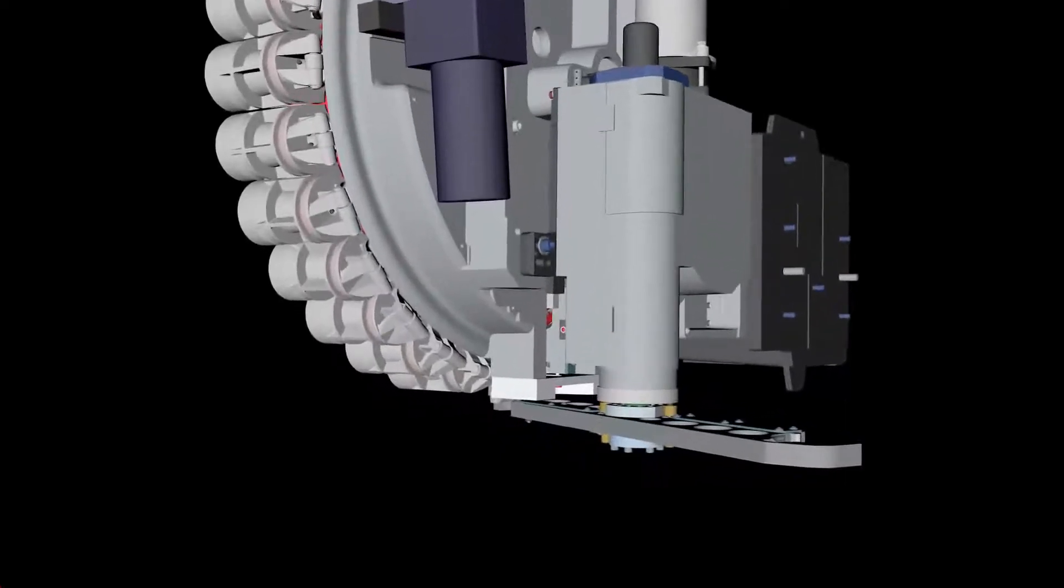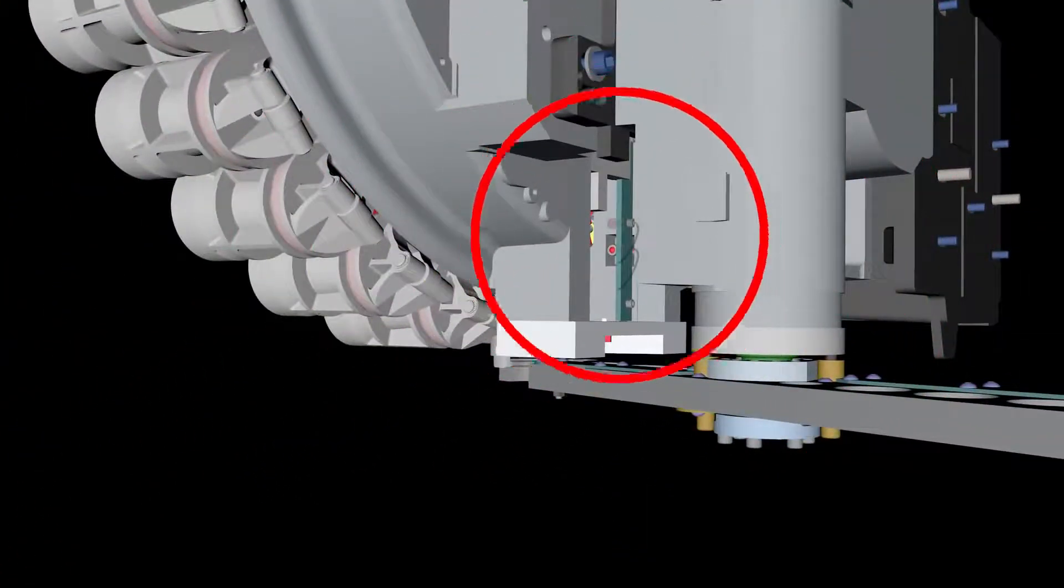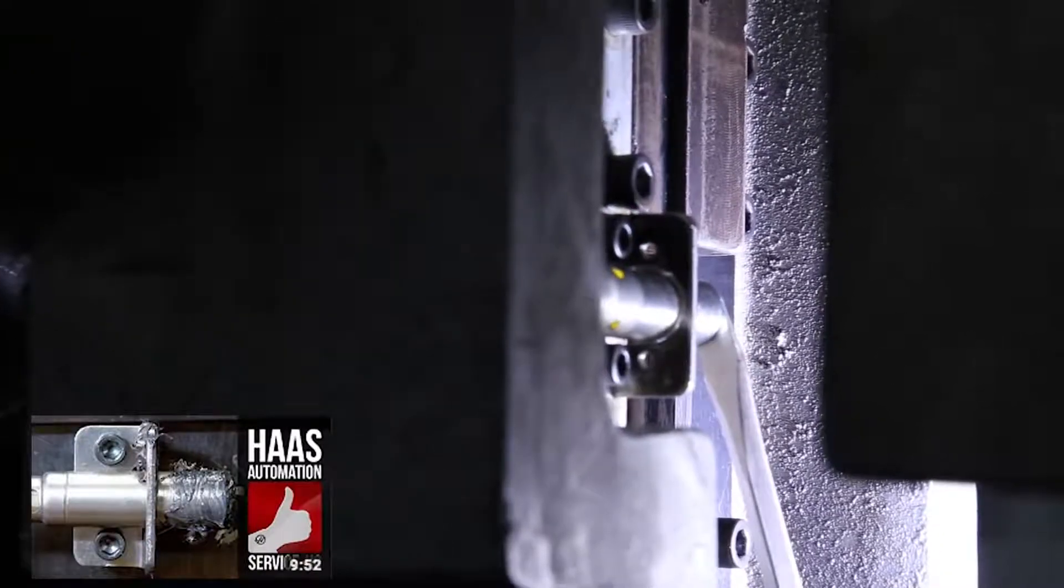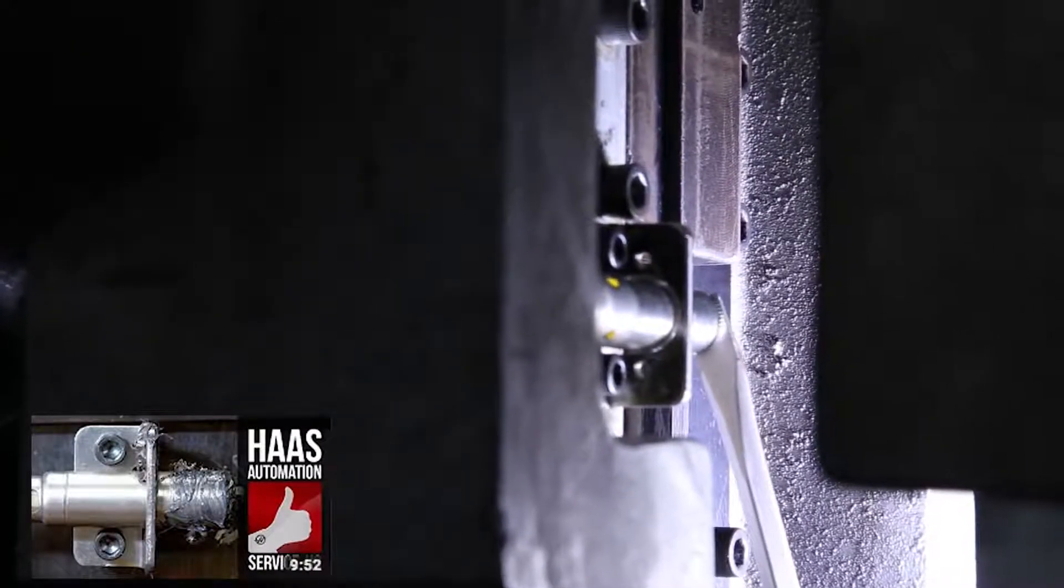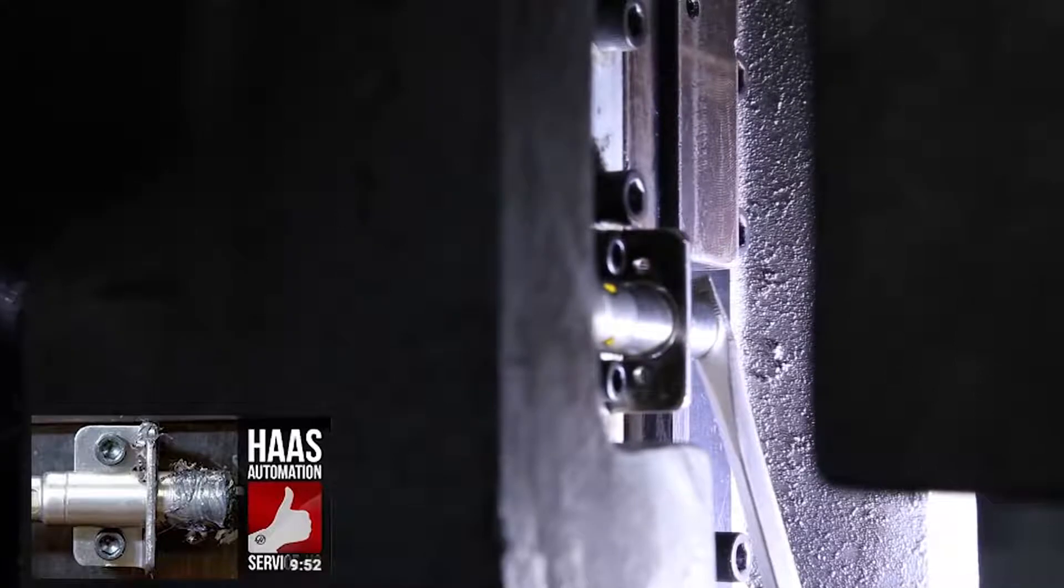Examine the pocket up and down proximity switches. Look for contamination or damage. Touch the face of each switch with a small flat blade screwdriver. The switch should change state.